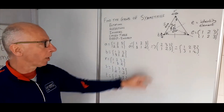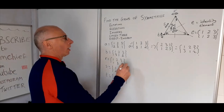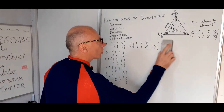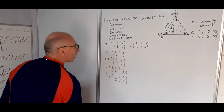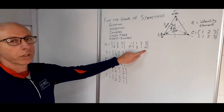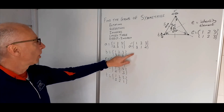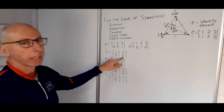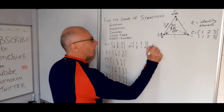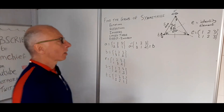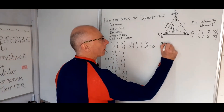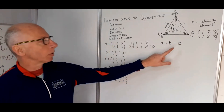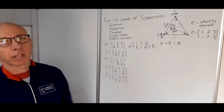So the inverse — which group does that equal? We want three, one, two in the bottom, and we can see that B equals the inverse of A. So A composite B gives us the identity element, because things return back to how they were.